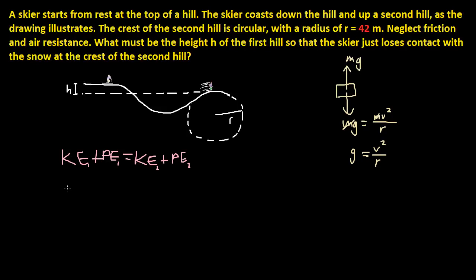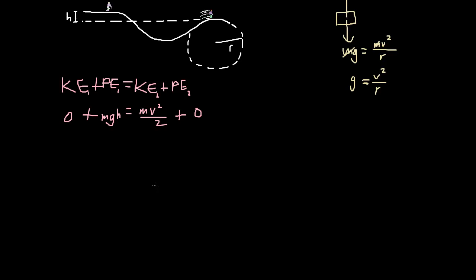So KE, well, he's starting at rest, so it's going to be 0. And potential energy is going to be just mgh. This is equal to KE2, which is going to be mv squared over 2 plus PE2, which is going to be 0 actually, because we're going to say that this horizontal is going to be 0. So here m cancels out as well. So g times height is equal to v squared over 2.